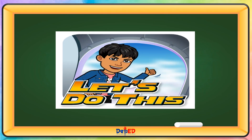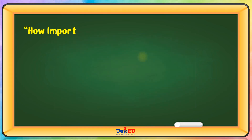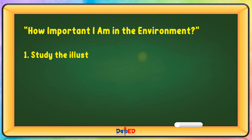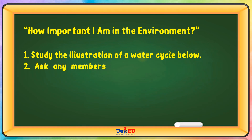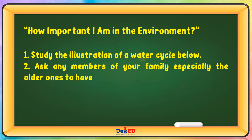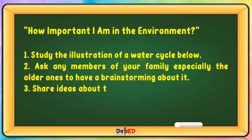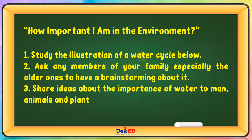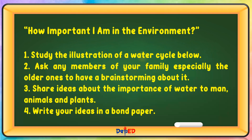Activity: How important is water in the environment? Study the illustration of a water cycle. Ask members of your family, especially the older ones, to brainstorm about it. Share ideas about the importance of water to man, animals, and plants. Write your ideas on bond paper.